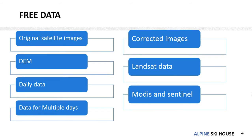The data available on Google Earth Engine can be considered as follows: you can access original satellite images, daily data or data for multiple days, corrected images, and data from many satellites like Landsat, MODIS, Sentinel, and other satellites.